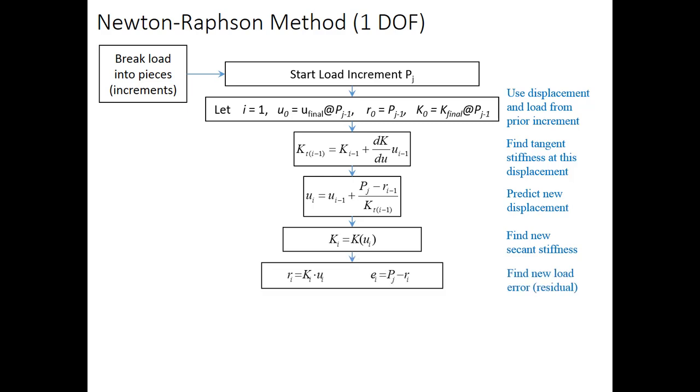Next, we find our load error, or the residual. So, we have the force predicted by the structure. So, that's R is equal to K times U. And then, we have our error, which is the load increment value minus the force that we're getting out of the structure. Once the force that we're applying is equal to the force that we're getting out of the structure, then we're converged. So, we want our error to be equal to 0.